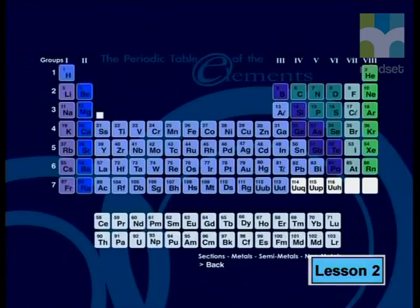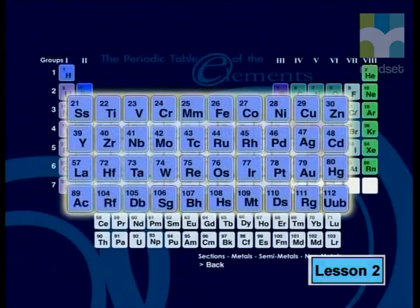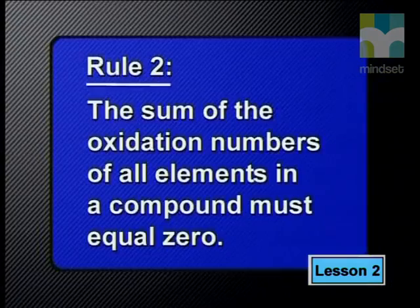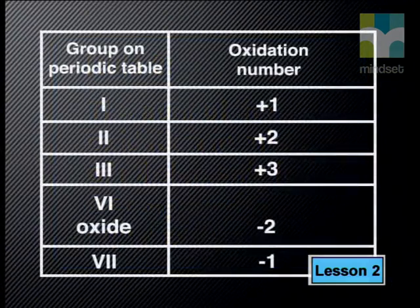Rule three doesn't give oxidation numbers for elements in all groups of the periodic table. For the transition metals and for elements in groups four, five, and six, more than one common valency exists, so more than one oxidation number can be used. However, using both rule two and rule three together makes it possible to calculate oxidation numbers for all the elements in any compound.